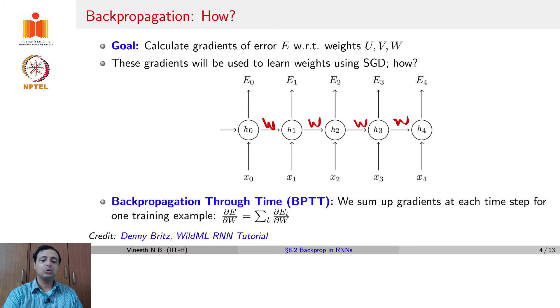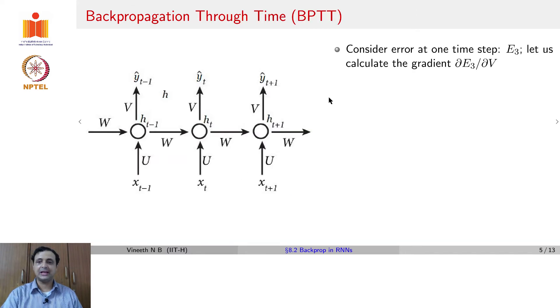So if we had to compute ∂E/∂W, where E is an overall error, ∂E/∂W would be given by summation over t, ∂E_t/∂W, where E_t is the error at each time step. So our next question boils down to, how do you compute each of these ∂E_t/∂W? Let us see that now.